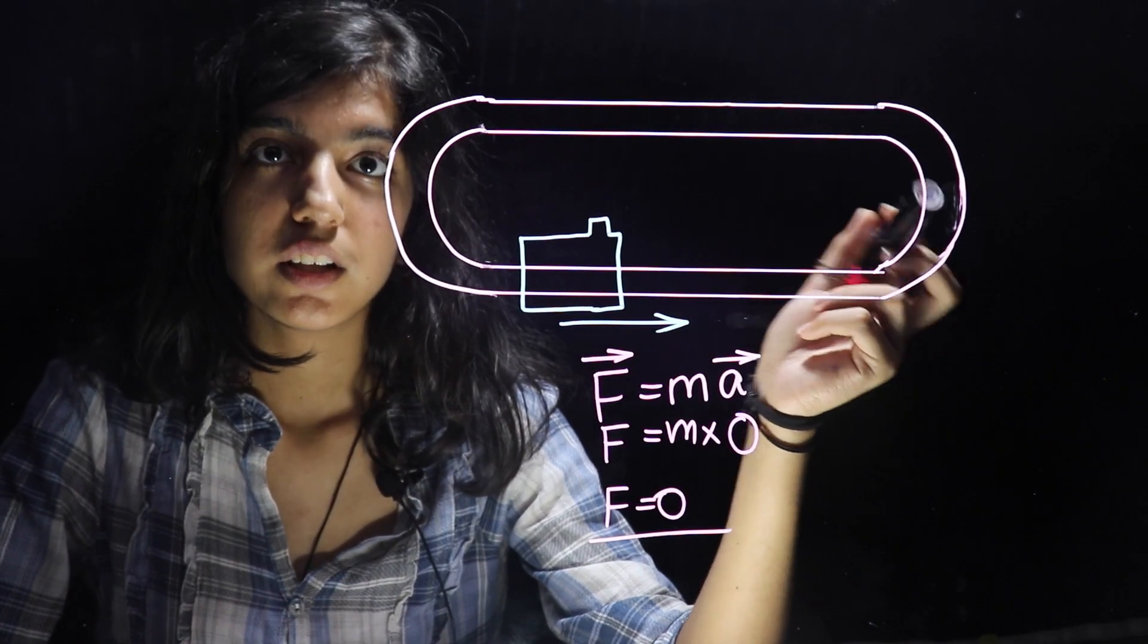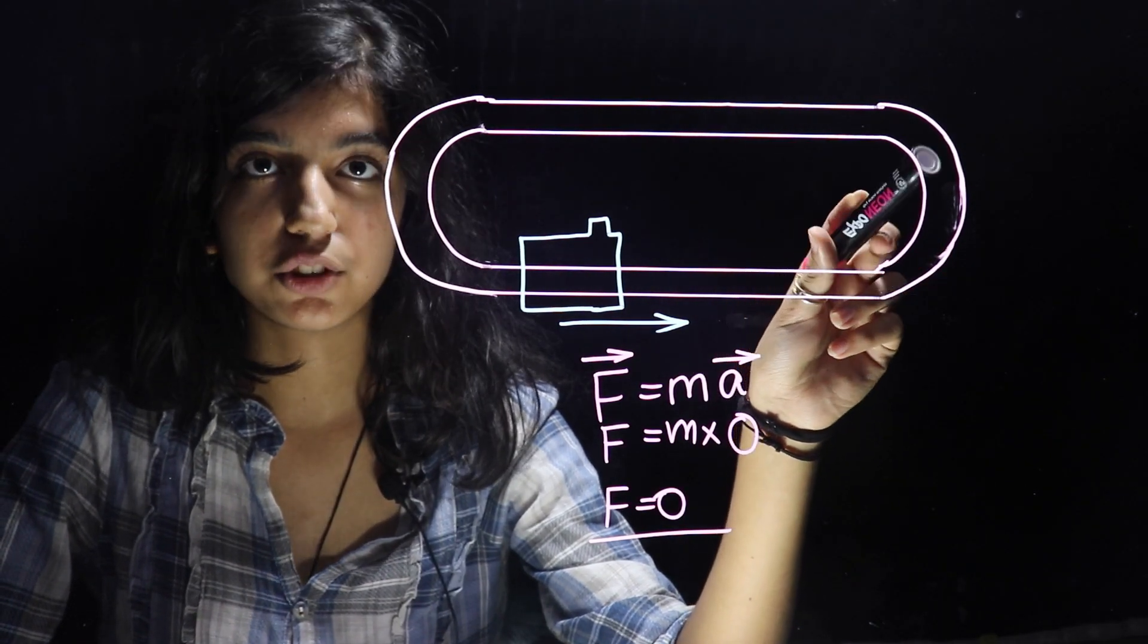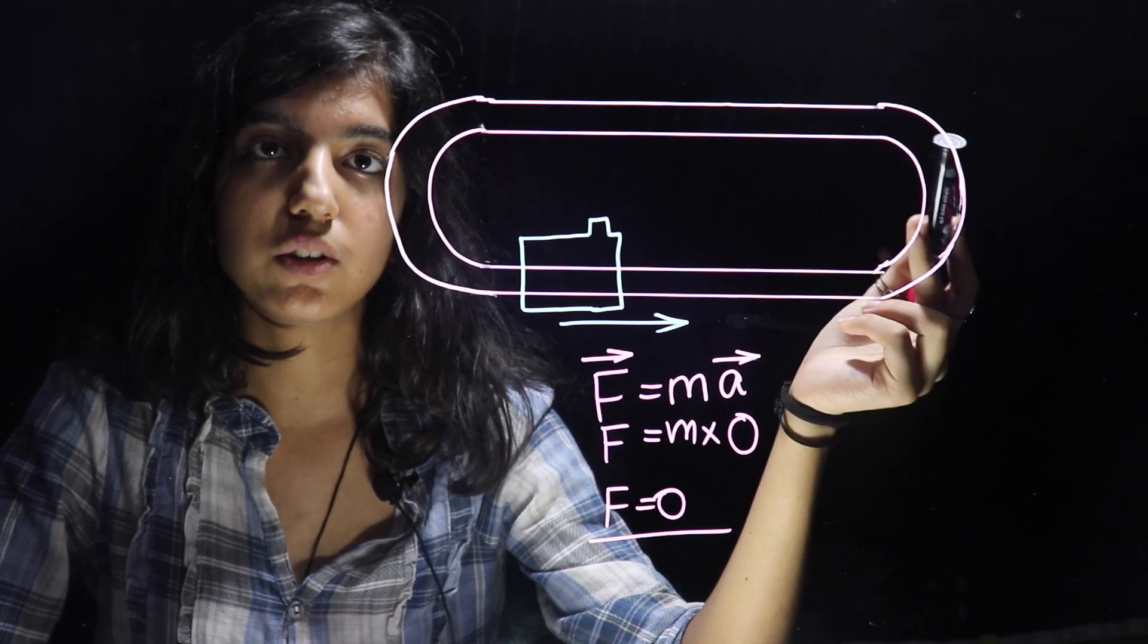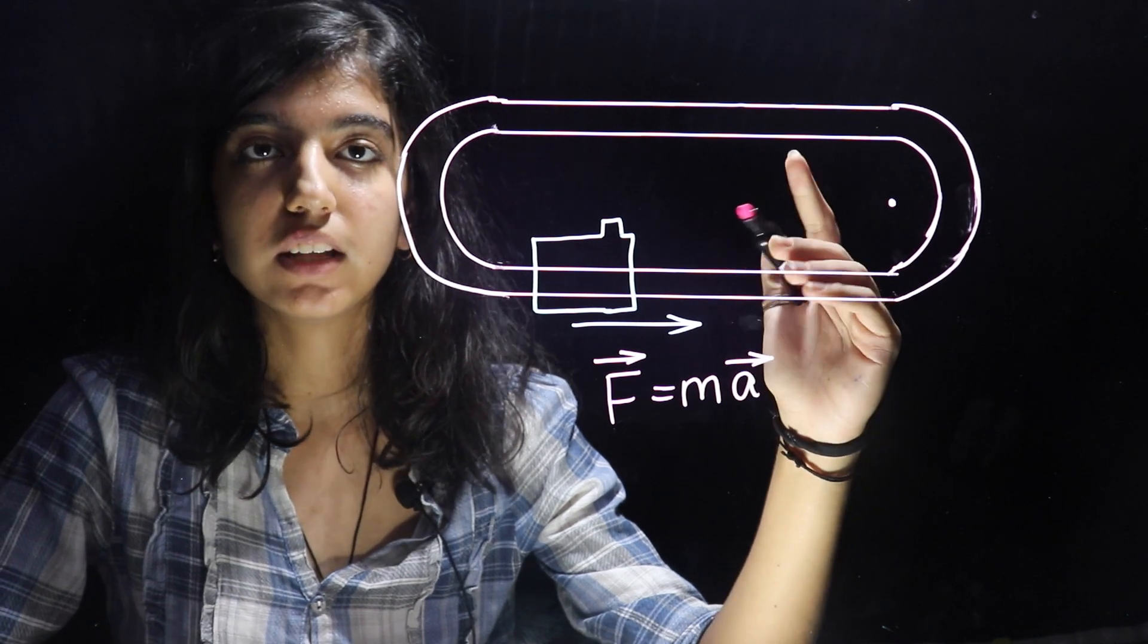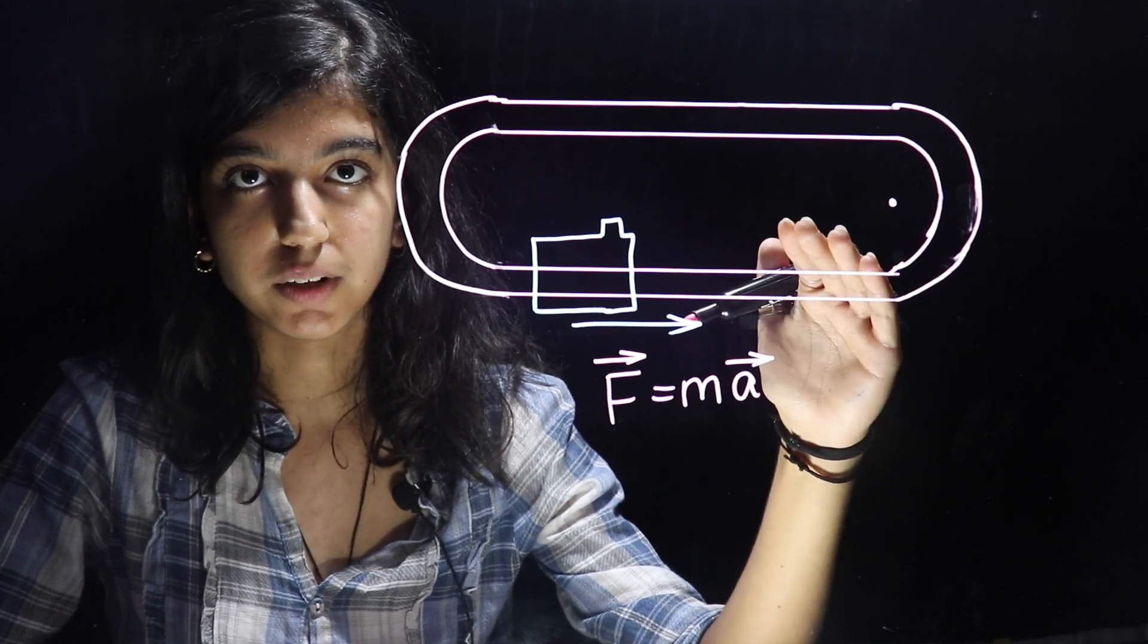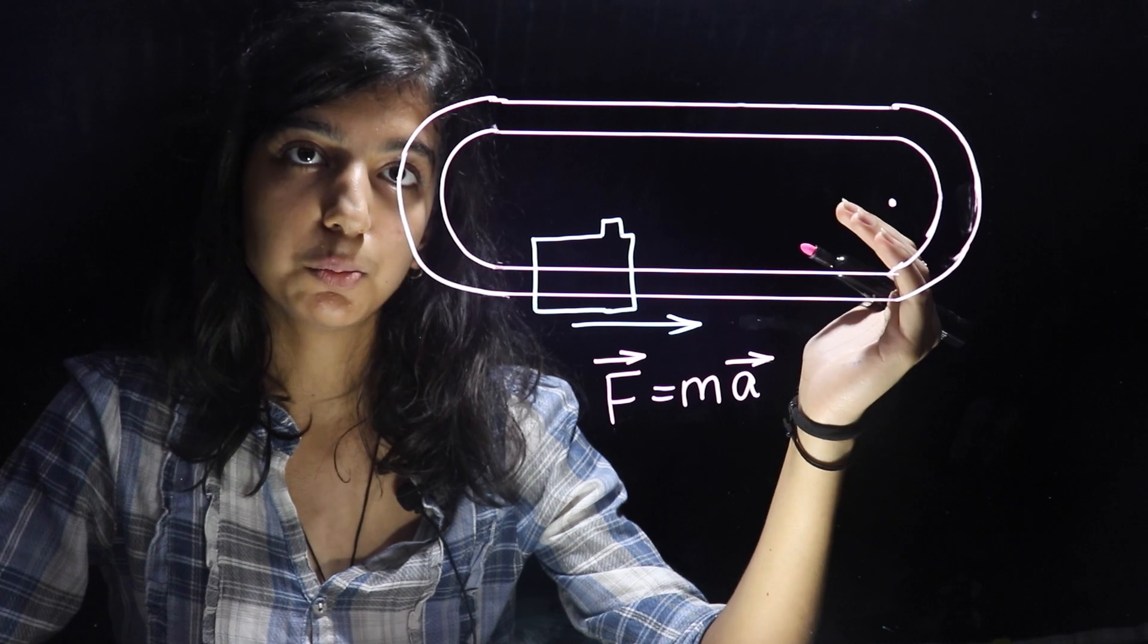On the curved path, the speed is constant. But as the direction of motion is continuously changing, the velocity is not constant. Hence, the acceleration is non-zero and it's always directed towards the center of the curved path. This is called the centripetal acceleration.